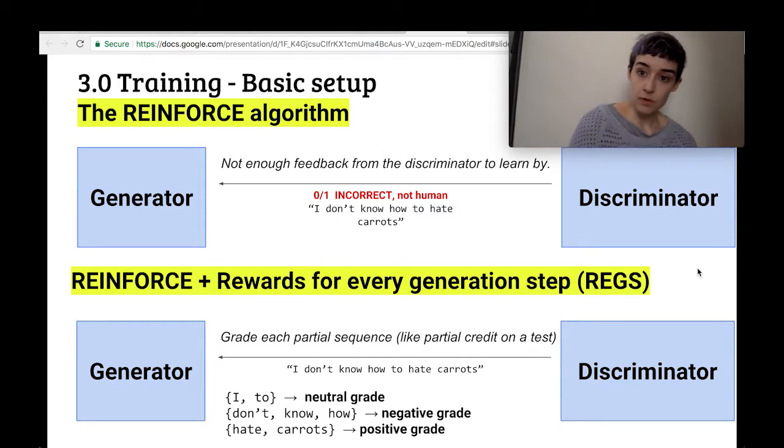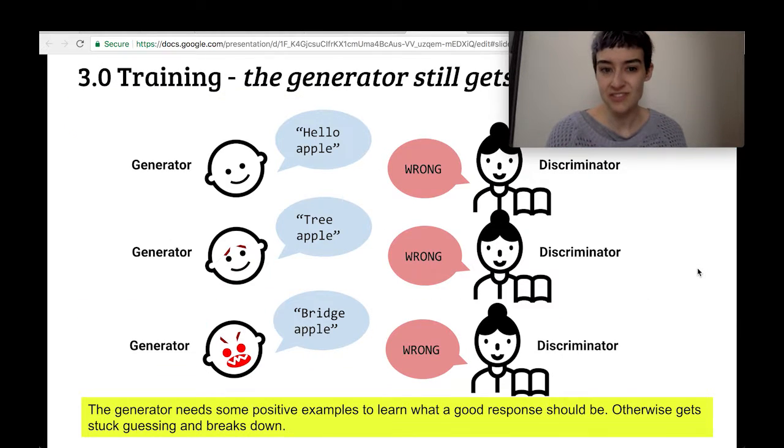All right, so the next problem, like we talked about in class, GANs are really hard to train. Because the generator gets really unstable over time, it's very hard to keep the generator learning at a reasonable, steady pace and not just go crazy. So the authors definitely noticed that.